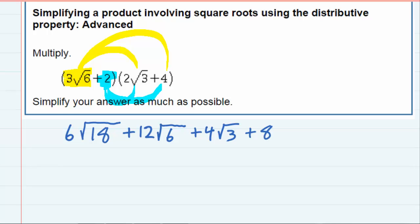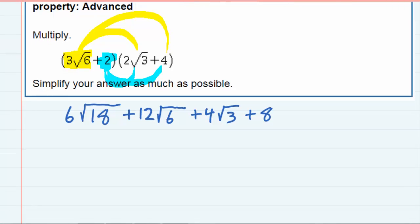So I've distributed and done the multiplication, but I'm also going to need to simplify as much as possible. So the first expression here will simplify because 18 can be written as nine times two underneath the radical.